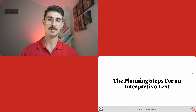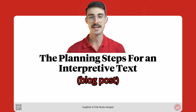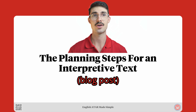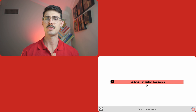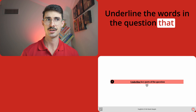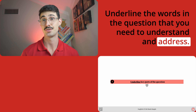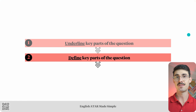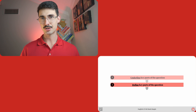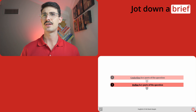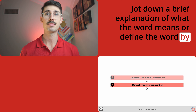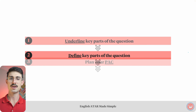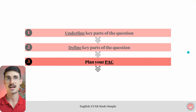Here are the planning steps for an interpretive text — the steps we will be using to write our blog posts. Step number one: underline key parts of the question. This one sounds familiar. At this step, you should underline the words in the question that you need to understand and address. Step number two is define key parts of the question. Step two requires you to jot down a brief explanation of what the word means or define the word by using some synonyms.